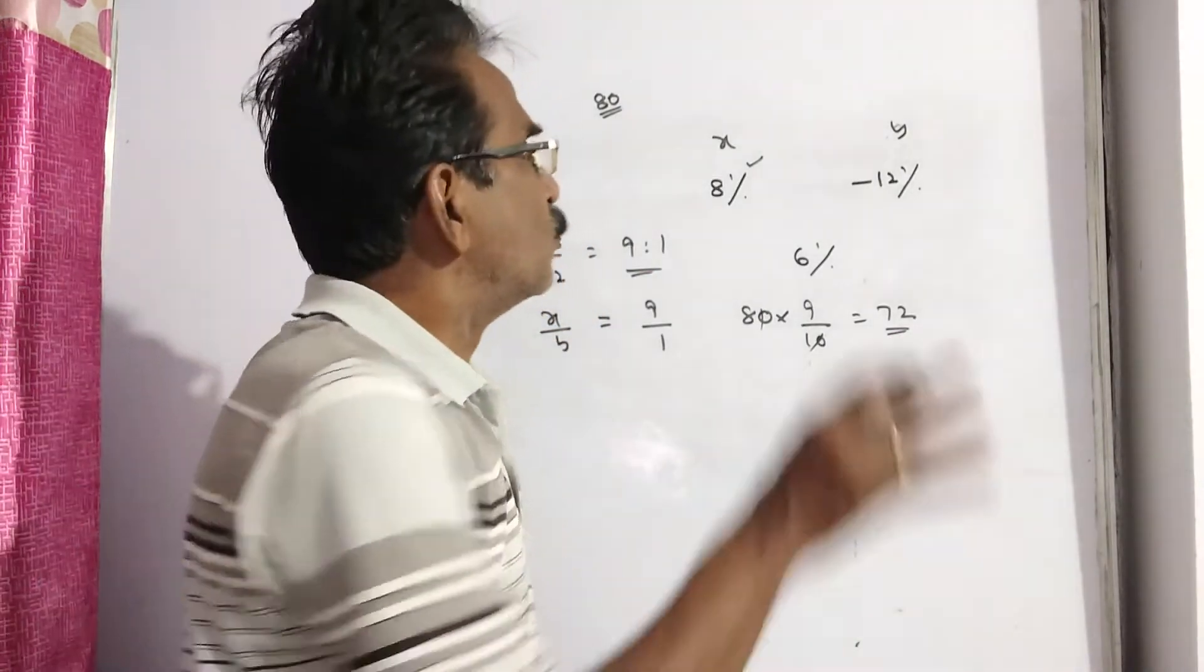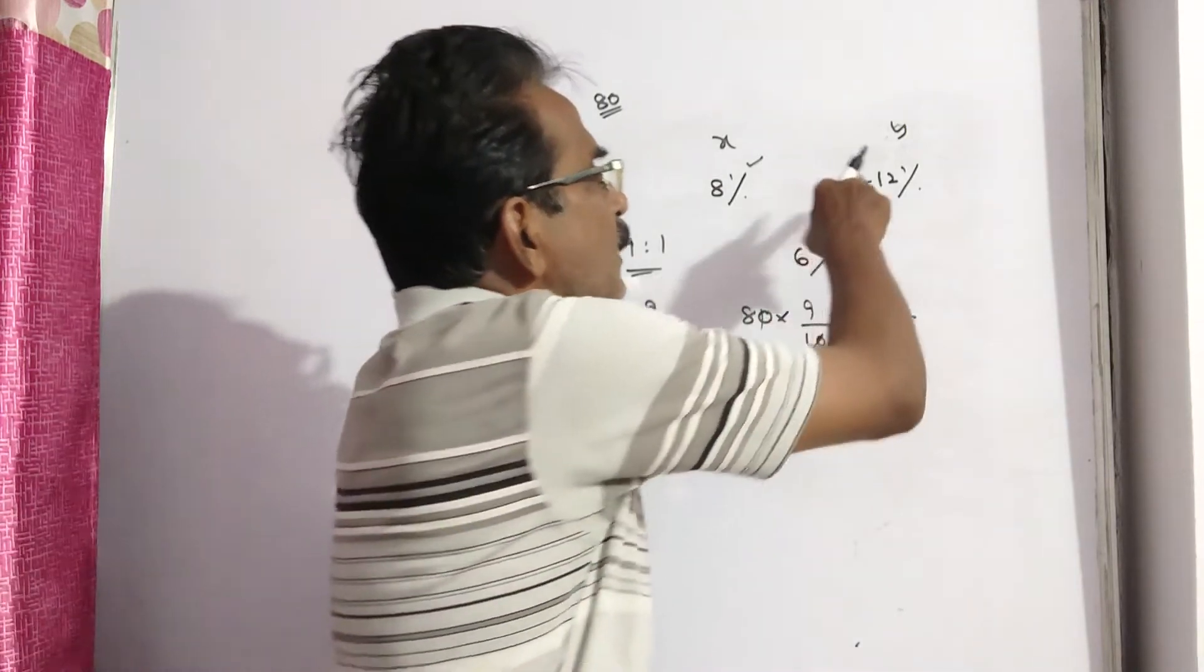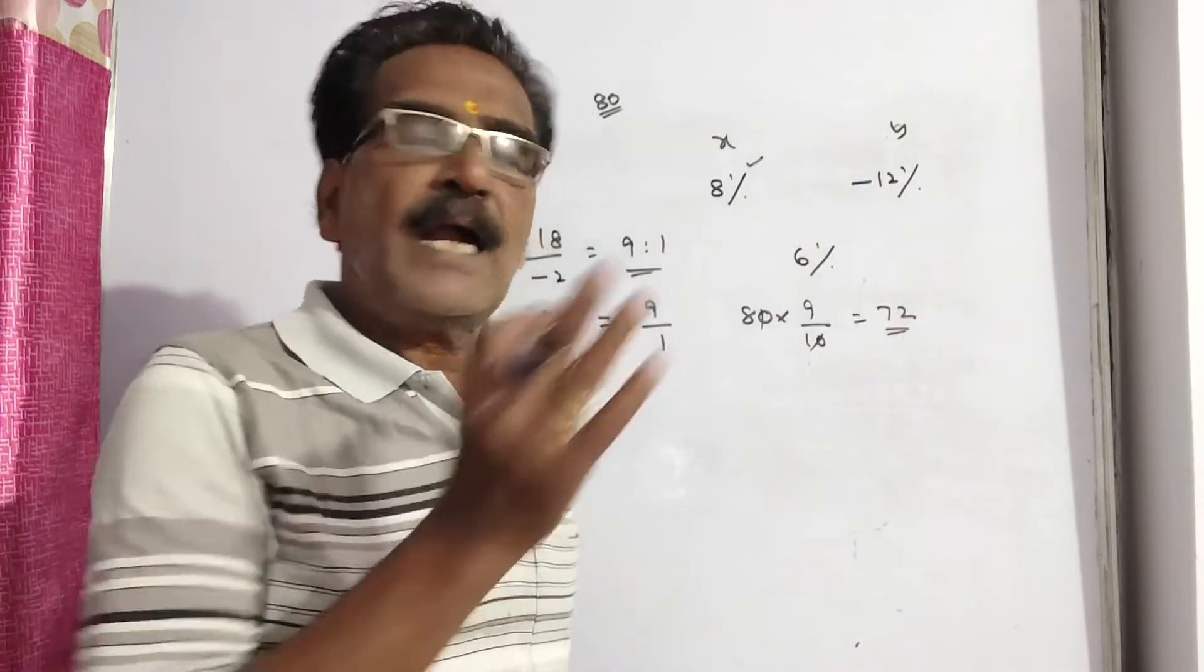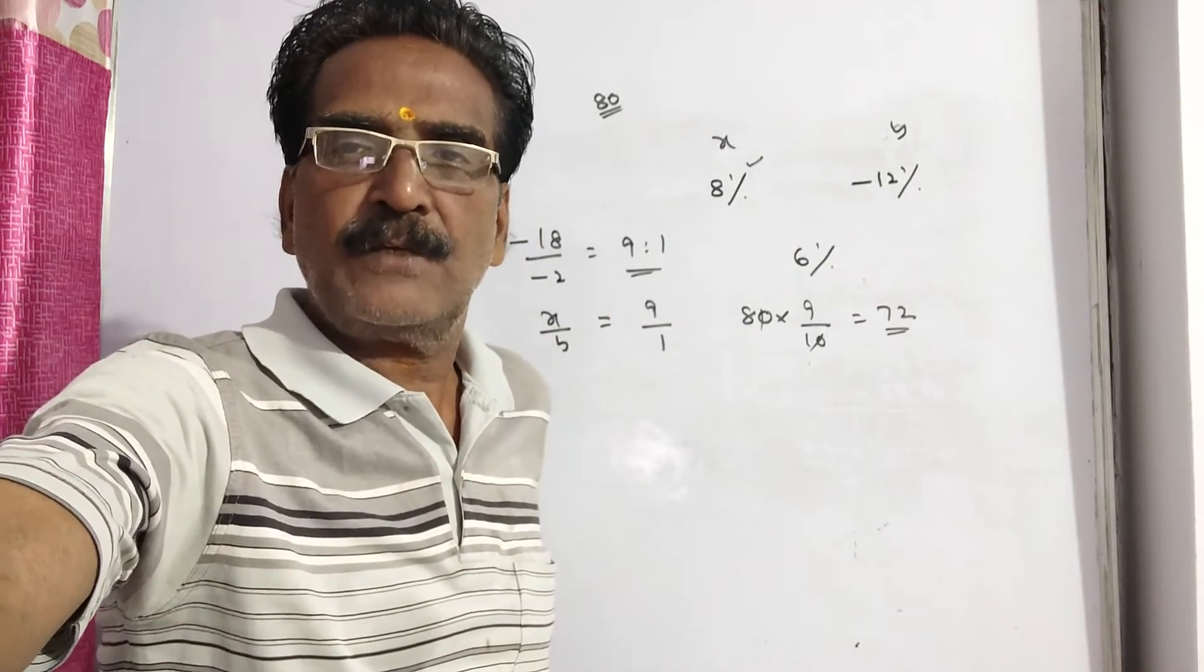Friends, 72 articles are sold at 8% profit and the remaining 8 articles are sold at 12% loss and then overall profit percent is 6%. Okay friends, thank you. Have a nice day.